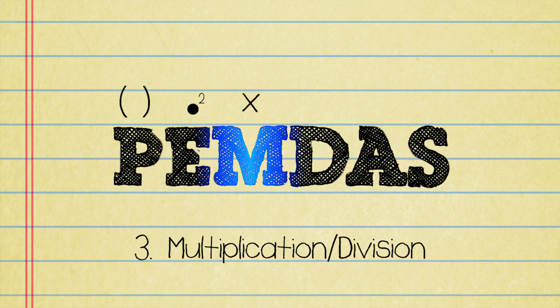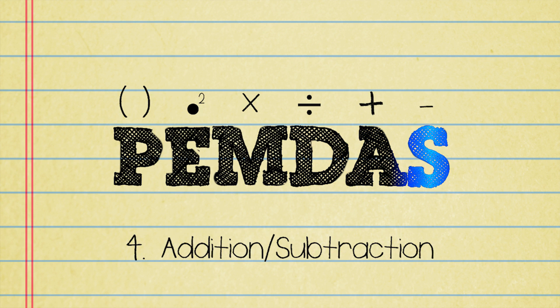Then we do either multiplication or division. That depends on what comes first from left to right. We'll get to that soon. And then we do addition and or subtraction. When it comes to addition and subtraction, the order really doesn't make that much of a difference.